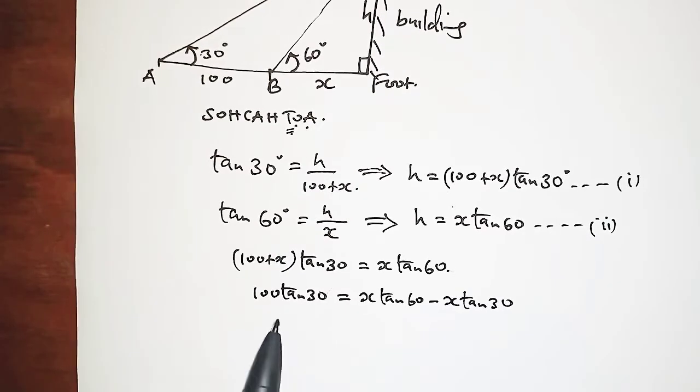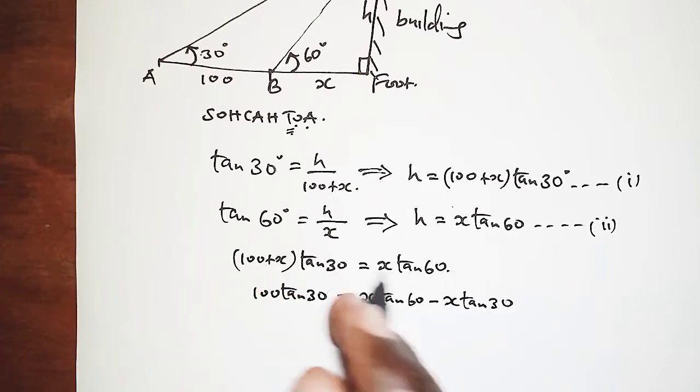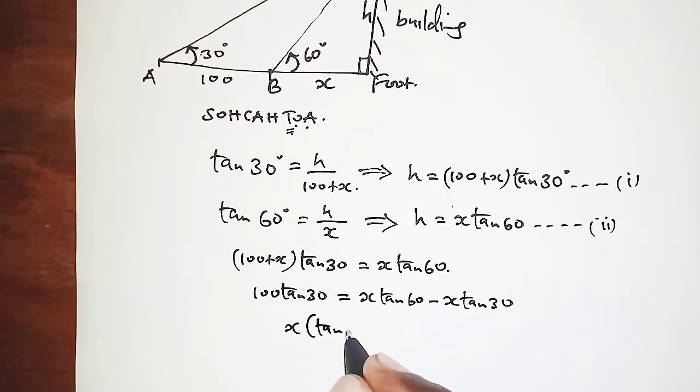So X is a common factor here, so I can switch this so that on the left-hand side now I have X times (tan 60° - tan 30°), and on the right-hand side I can have 100 tan 30°. It doesn't make a difference. I just wish to have the subject on the left-hand side.